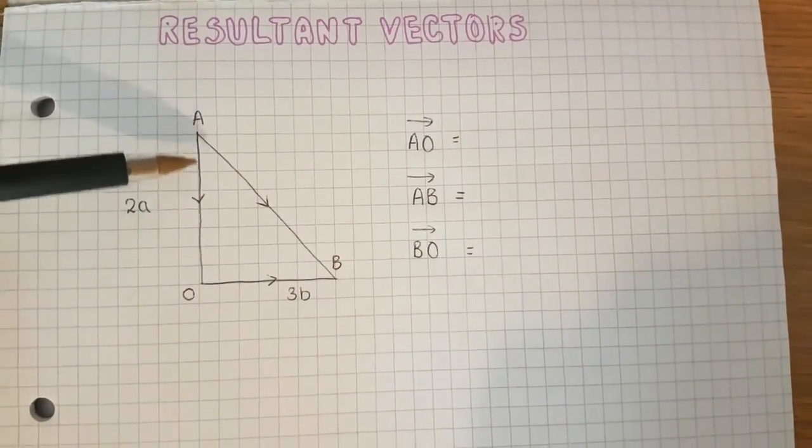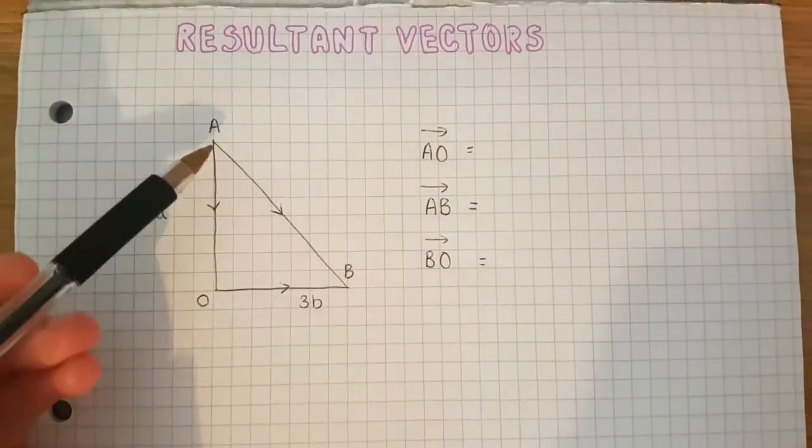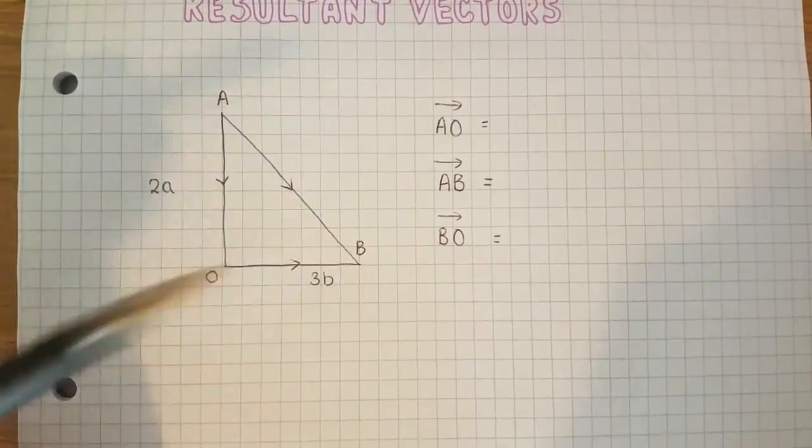You can see here we have a vector of 2a and a vector of 3b, and when we put these together we get this vector AB. We're going from the end of one to the nose of another.